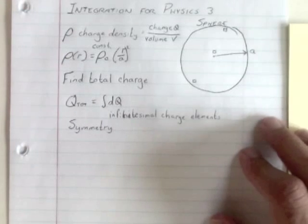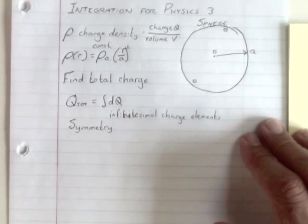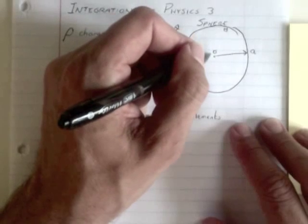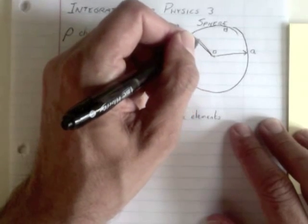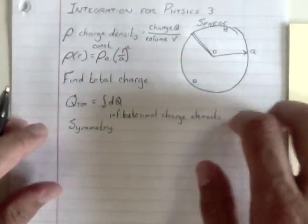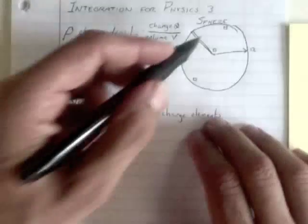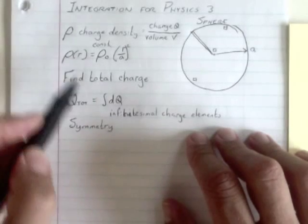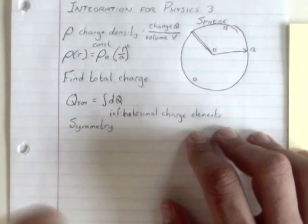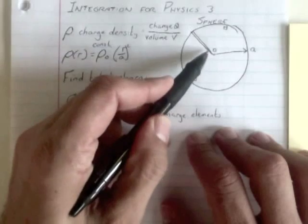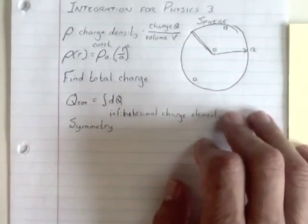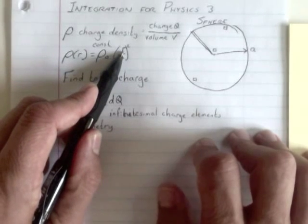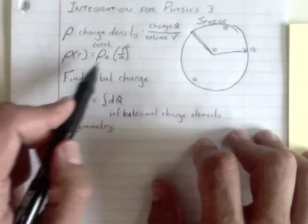The other thing is, I've got to be really careful for how I choose my infinitesimal element. For example, maybe you'd say, let's pick a little pie slice. The problem with that is something in here has a different charge density than something in here. When you're integrating, you want to group together things that are similar. When I look at this charge density, everything at the same distance from the center will have the same charge density.